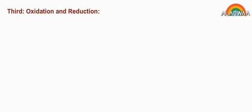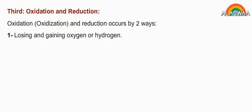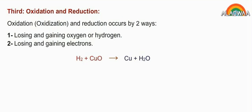Oxidation and reduction. Oxidation and reduction occurs by two ways: losing and gaining oxygen and hydrogen, and losing and gaining electrons. H2 plus CuO produces Cu plus H2O.